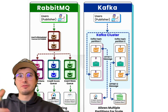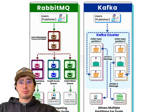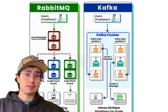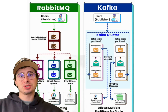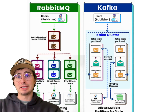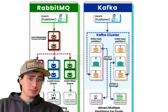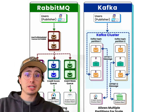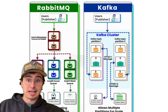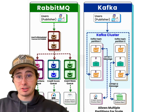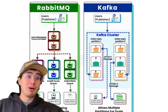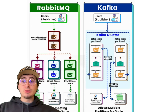RabbitMQ really shines in its flexibility and ease of use. Its great support for multiple messaging protocols makes it highly adaptable for integrating disparate systems. RabbitMQ's acknowledgement, retry, and dead-letter queue mechanisms ensure reliable message delivery, making it an excellent choice for task queues and workflows where reliability is critical. Its straightforward setup and extensive documentation lower the barrier to entry for new users, and its plug-in architecture allows users to extend functionality relatively easily.